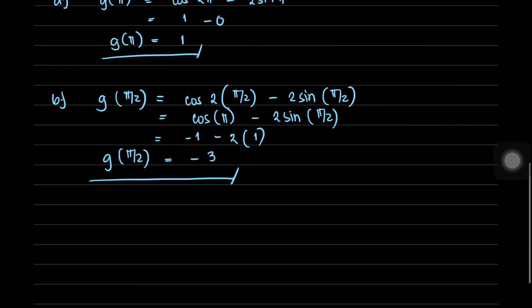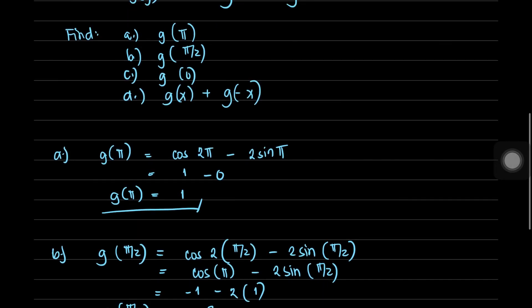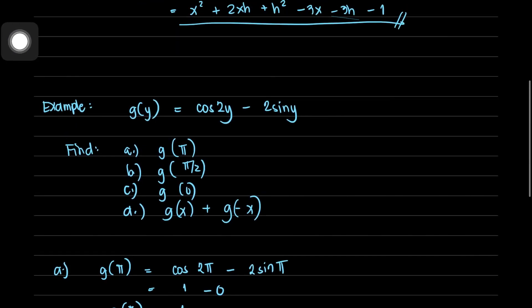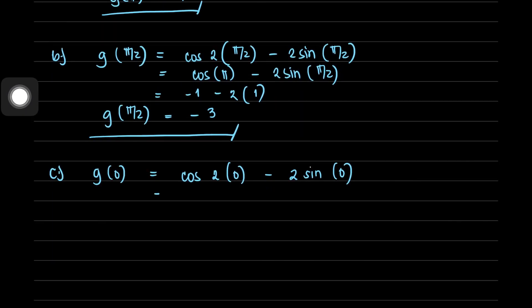For part (c), g(0): replacing y with 0, we have cos(2 × 0) - 2sin(0) = cos(0) - 2sin(0). Cosine of 0 equals 1, and sine of 0 equals 0. So g(0) = 1 - 0 = 1.